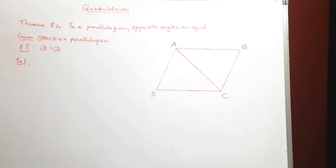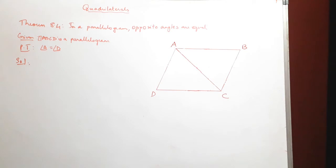Hello students, in this video we will be going through a few theorems of parallelogram. In our previous two videos we covered theorem 8.1, theorem 8.2 and theorem 8.3. In this video we will be covering the remaining theorems on parallelogram. The first theorem is theorem 8.4, which says that in a parallelogram opposite angles are equal.